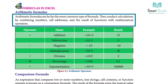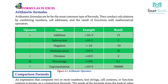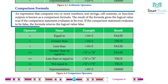Arithmetic formulas are by far the most common type of formula. They conduct calculations by combining numbers, cell addresses, and the results of functions with mathematical operators. Comparison formula: an expression that compares two or more numbers, text strings, cell content, or function output. The result gives the logical value TRUE if the comparison evaluates to true.